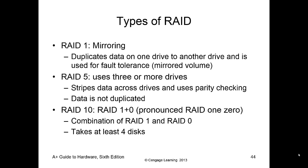RAID 1 is called mirroring. Two drives maintain an identical copy of the data - what's on one is on the other. You don't get the speed benefits of RAID 0. However, if one drive dies, you can restart and it will load from the other copy. You don't lose anything because it's a 100% duplicate copy of the drive.